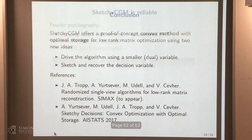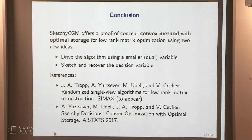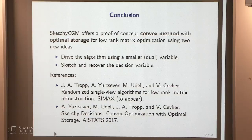In conclusion, this is a proof-of-concept convex method for compact matrix optimization problems. Two new ideas make it possible: driving the algorithm using a smaller dual variable, and sketching and recovering the decision variable. Ultimately, we'd hope to do this for a much wider class of problems — every SDP. The real question is whether convex optimization inherently requires more memory than non-convex optimization for the same kinds of problems.